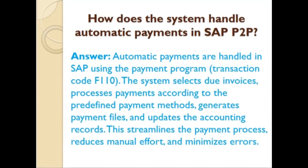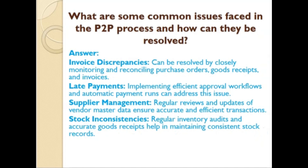How does the system handle automatic payments in SAP P2P? Automatic payments are handled in SAP using the payment program with transaction code F110. The system selects due invoices, processes payments according to predefined payment methods, generates payment files, and updates the accounting records. This simplifies the payment process, reduces manual effort, and minimizes errors.